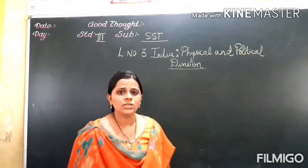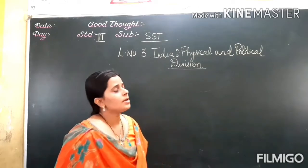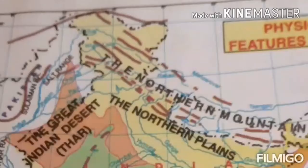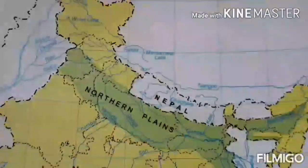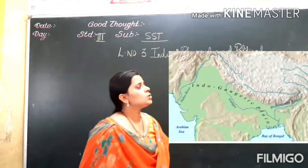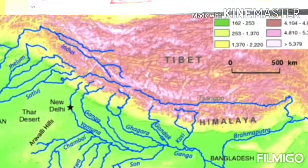Now we will go to the second division — the Northern Plain. The Northern Plain lies to the south of the Northern Mountain. It occupies a greater part of North India and is also stretched from Punjab to Assam. This plain is also known as the Gangetic Plain. Rivers that flow in this plain include the Ganga, Ravi, Satlaj, Indus, Brahmaputra, and others.